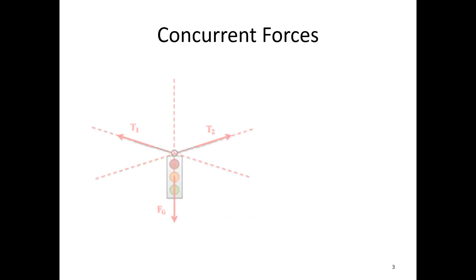With concurrent forces, all the forces come together at one point. We've got a traffic light here that's held up by two cables. The direction of the force for each cable would be along that direction of the cable, and a gravity force here acting straight down through the center of the traffic light.